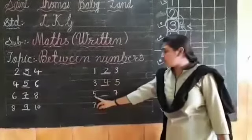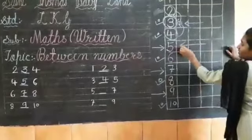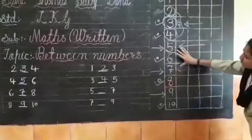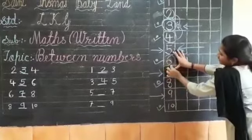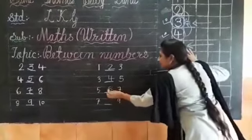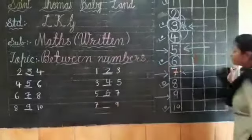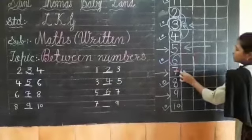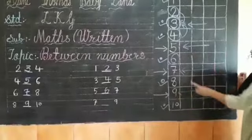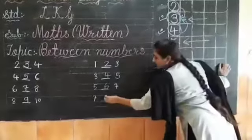Which number is in between of five and seven? Here is five, and here is seven. Which number is in between of five and seven? Six is in between of five and seven. And which number is in between of seven and nine? Here is seven, and here is nine. Eight is in between of seven and nine.